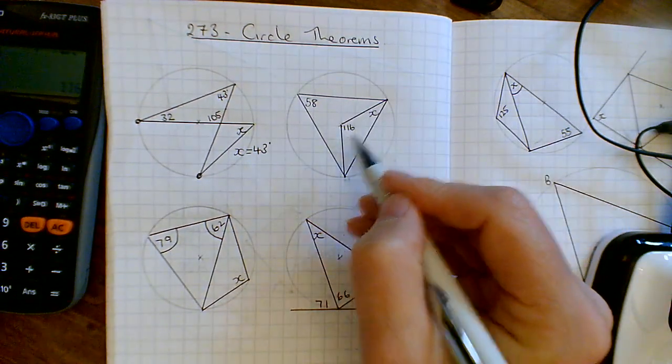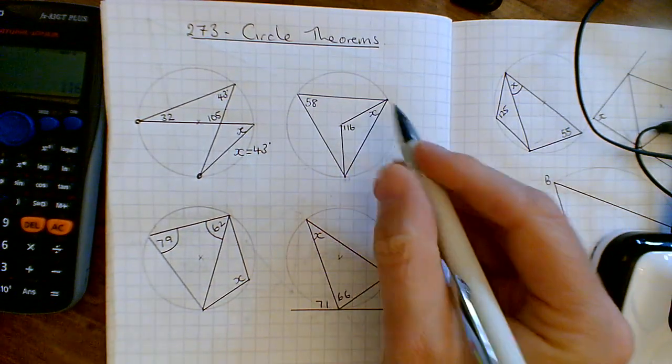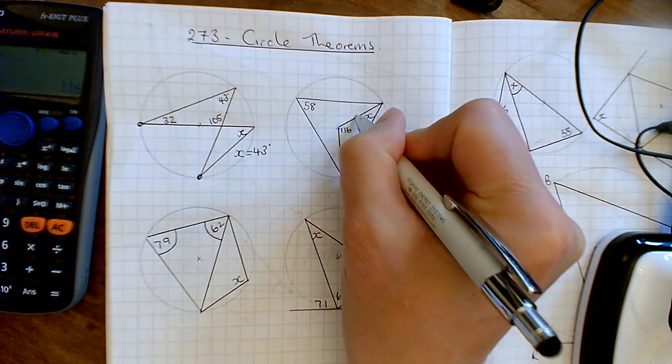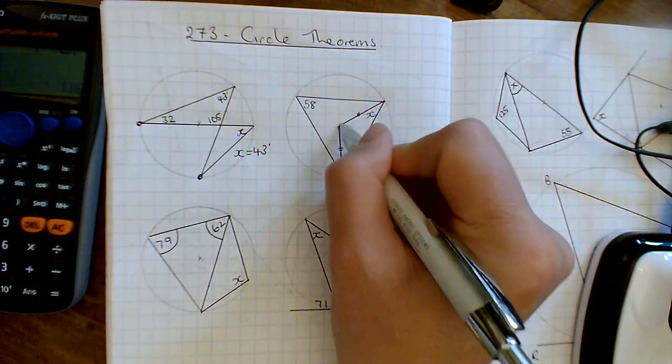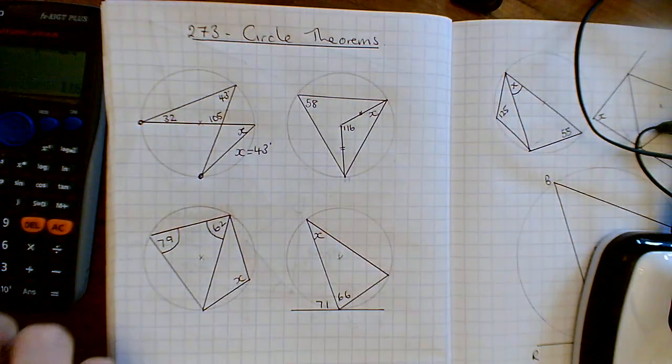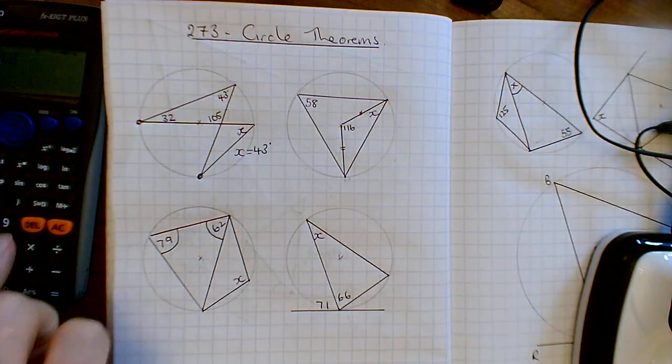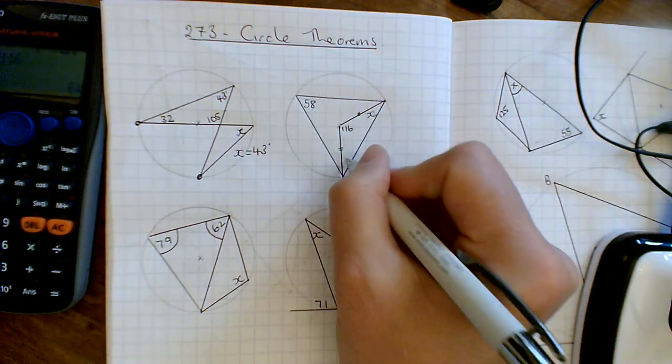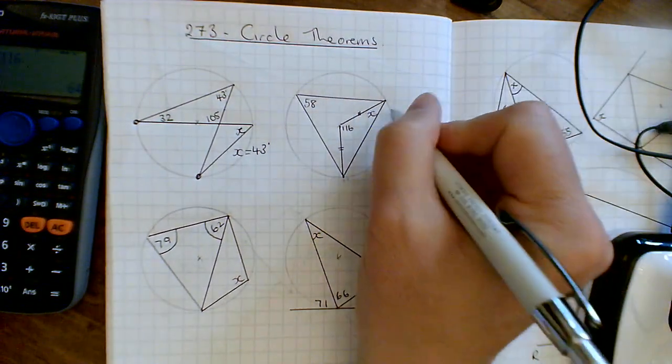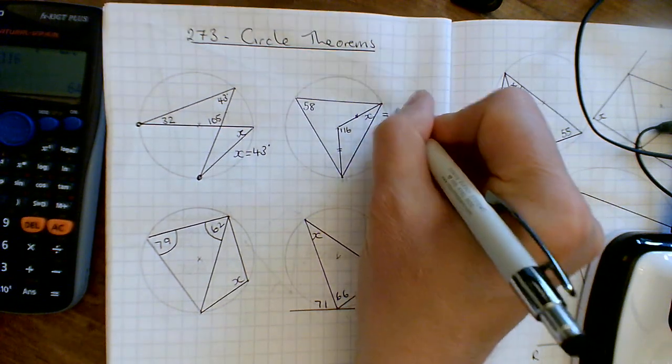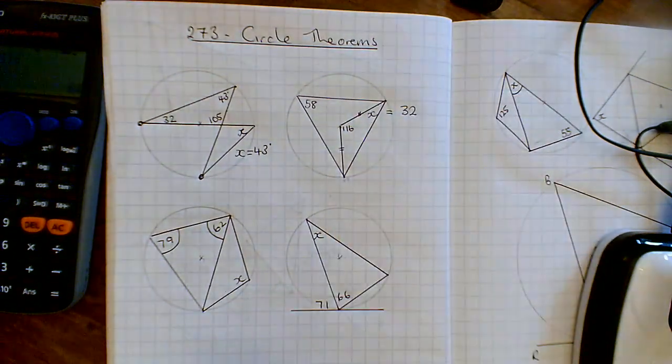And then the other thing to notice on this triangle, the little triangle here, is that this is a radius to the edge of the circle. And this is also a radius to the edge of the circle. So this, in fact, makes an isosceles triangle. So if I now do 180, take away the 116, I'm now at 64. So these two have to add up to 64. And because it's isosceles, the base angles are equal. This one, x, must equal 32. And you've got 32 down the bottom there as well.